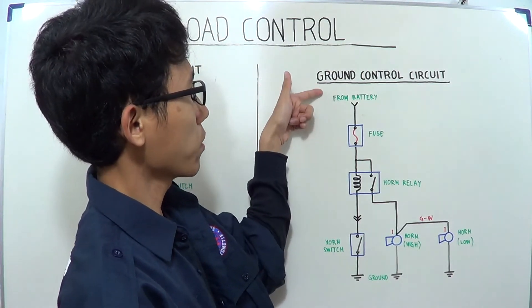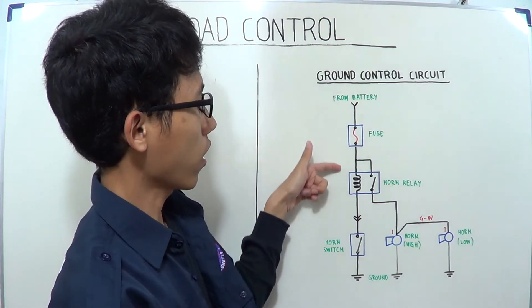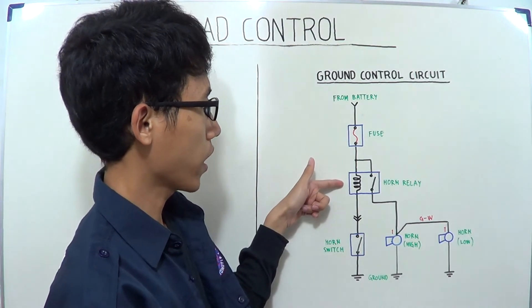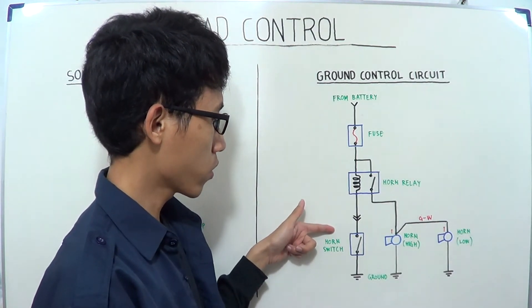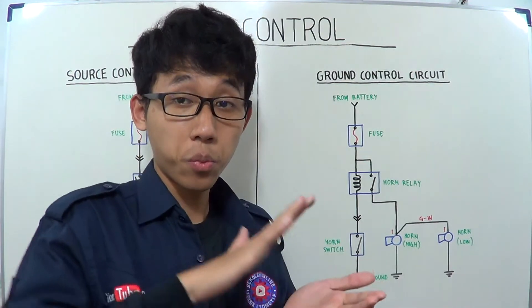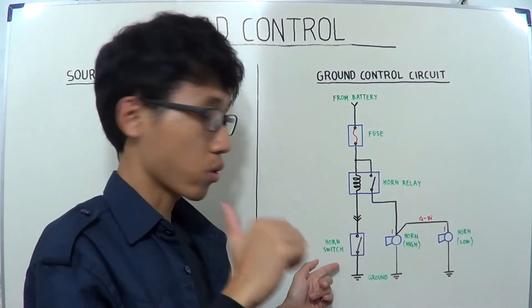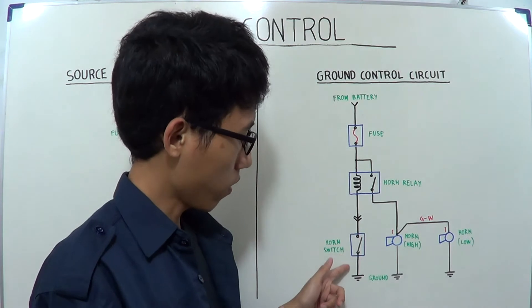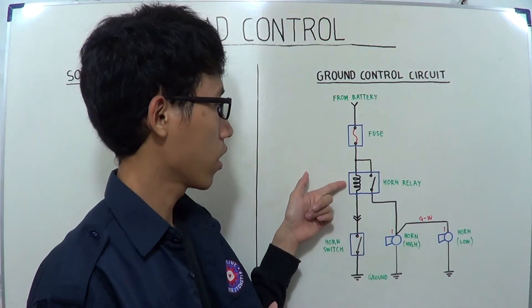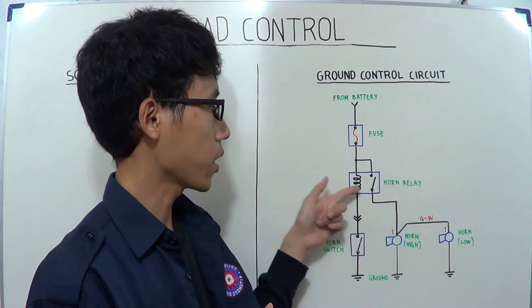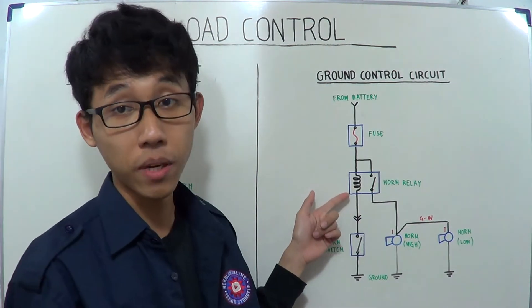The electric current from the battery flows to the fuse and to the coil of horn relay and to the horn switch when you push the horn switch and to the ground. Consequently, the coil of horn relay becomes an electromagnet.